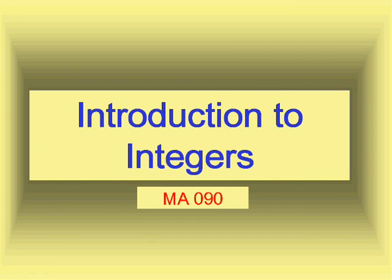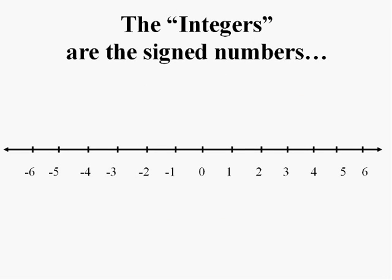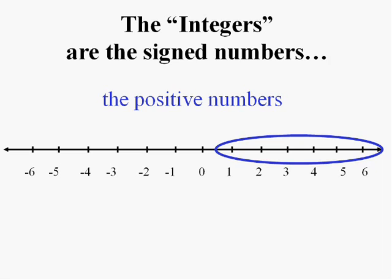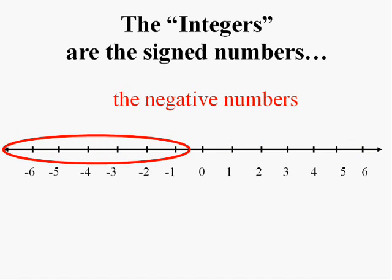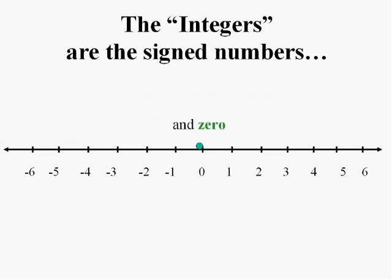In this chapter we want to start broadening our view of numbers to include the integers. What are the integers? The integers are the signed numbers. They're going to include everything — the positive whole numbers: 1, 2, 3, 4, 5, and 6. But we're also now going to go the other way on the number line and include the negative numbers: negative 1, negative 2, negative 3, etc., and 0. So that's the integers: the positives, the negatives, and 0.